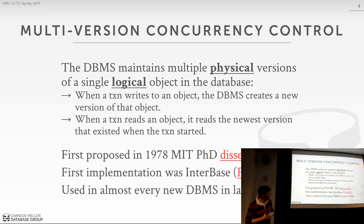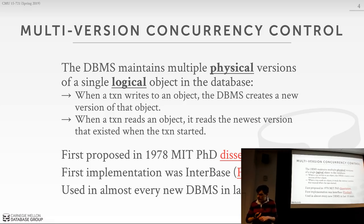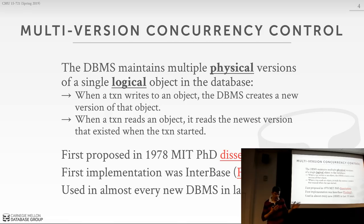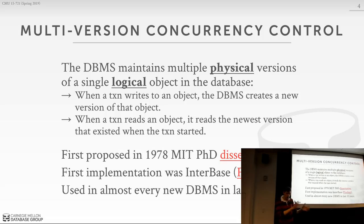MVCC is old. It was first proposed back in 1978 by a very famous dissertation done at MIT. The first commercial implementation in an actual real database system was done at DEC in the early 1980s in a system called Interbase. Later, the guy who worked on Interbase — Jim Starkey — went off and tried to build a replacement for InnoDB called Falcon for MySQL, which failed. Then he went off and built NuoDB, a new SQL startup out of Boston.